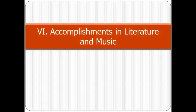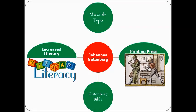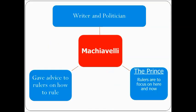Johann Gutenberg invented movable type, which leads to the printing press. It leads to the Gutenberg Bible and increases literacy. With the printing press, you can print thousands and thousands of books — instead of one monk in a scriptorium taking one year to copy one Bible, the printing press can mass-produce many copies. You also get a writer named Machiavelli, a writer and politician who gives advice to rulers on how to rule. He writes a book called The Prince, in which he says that rulers should focus on the here and now — not theory, but ruling for the present situation.